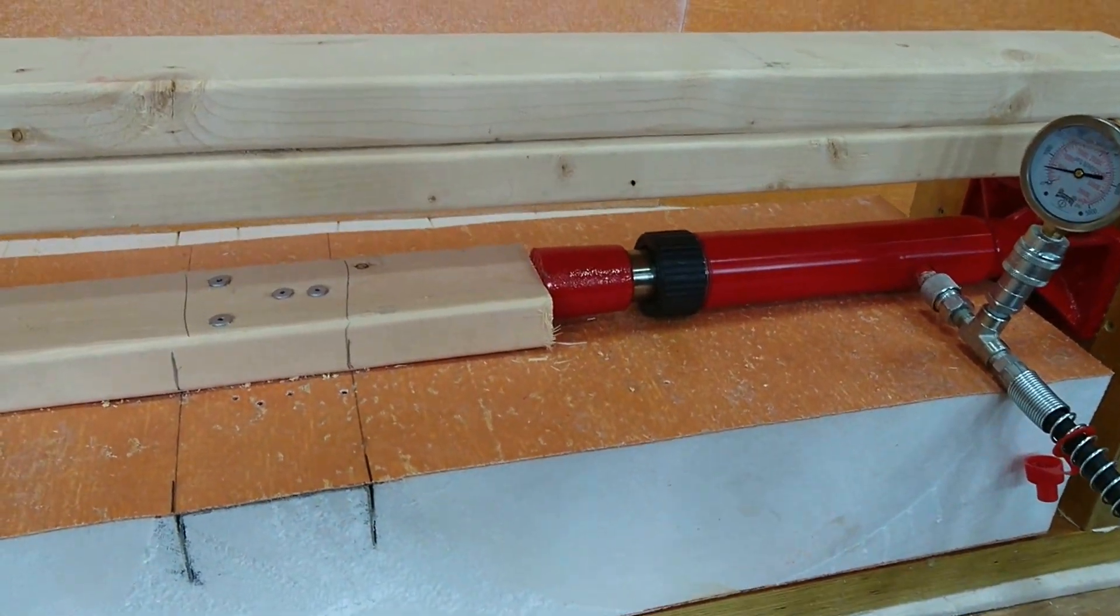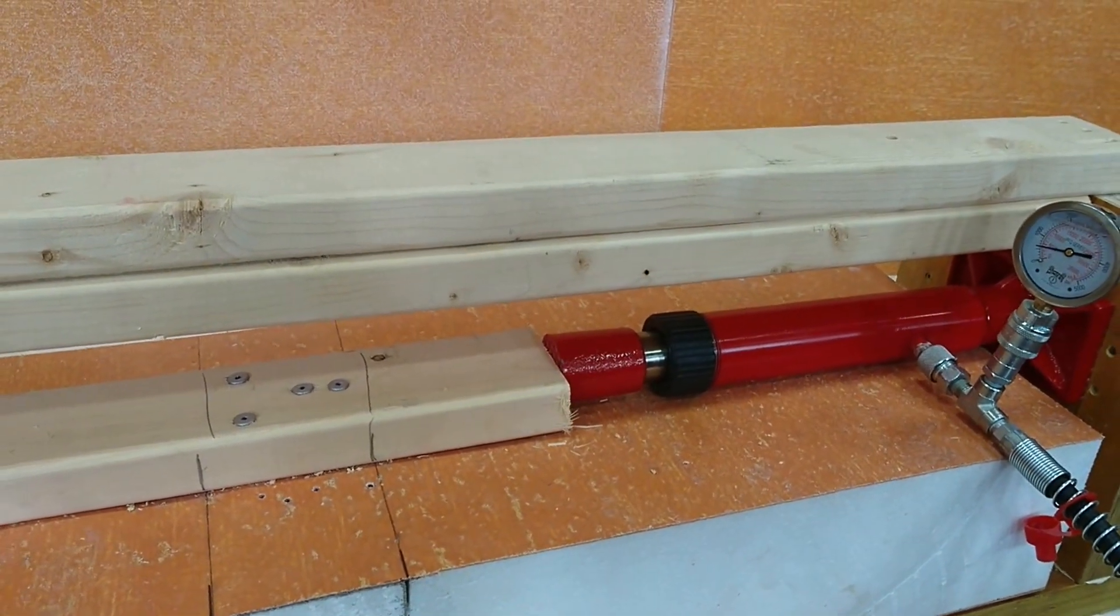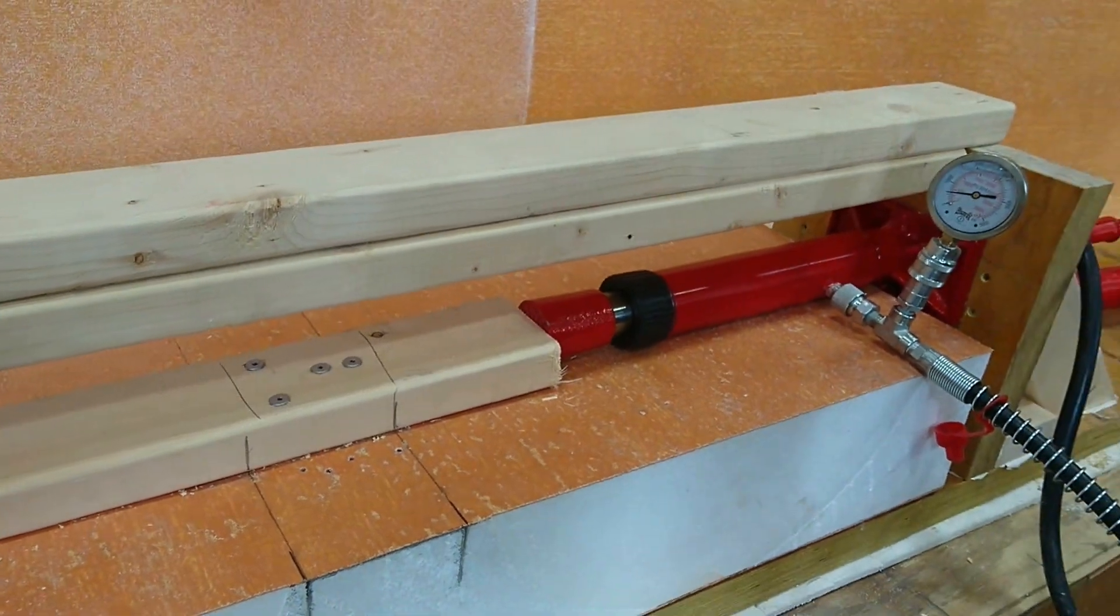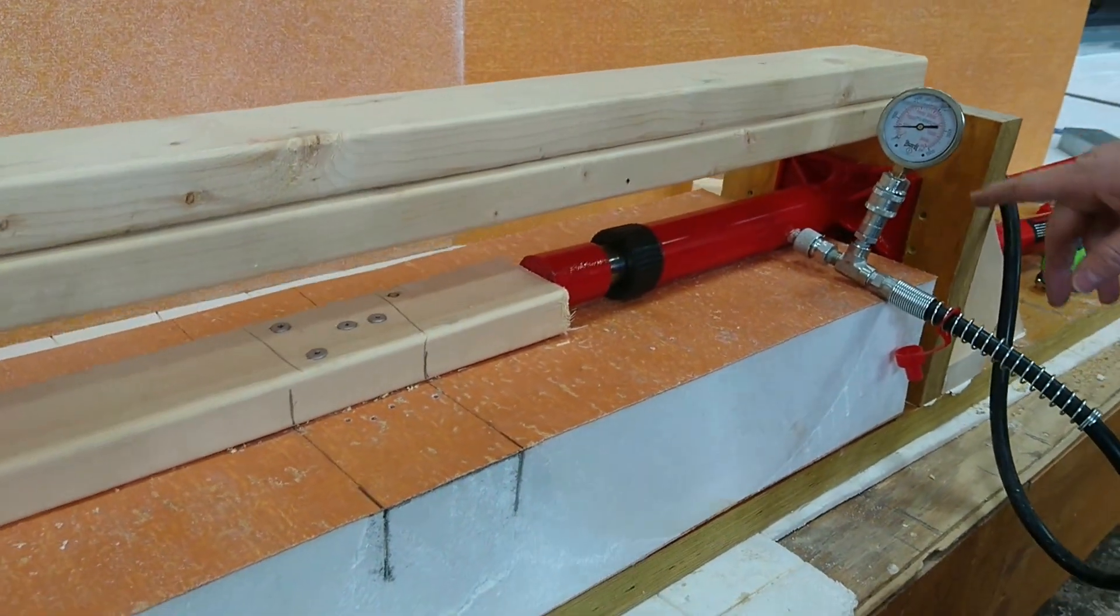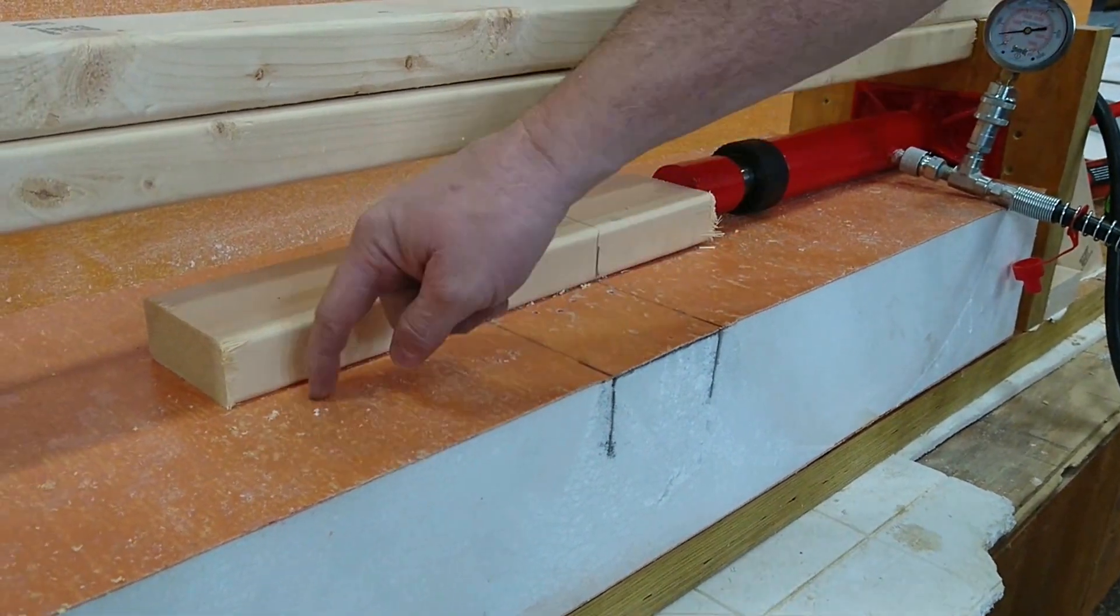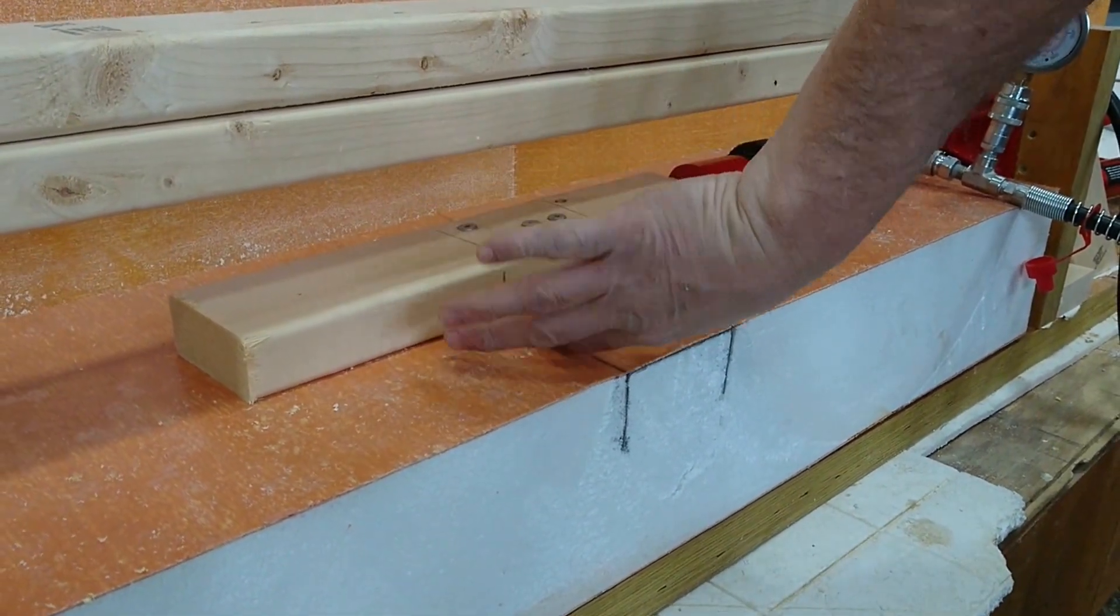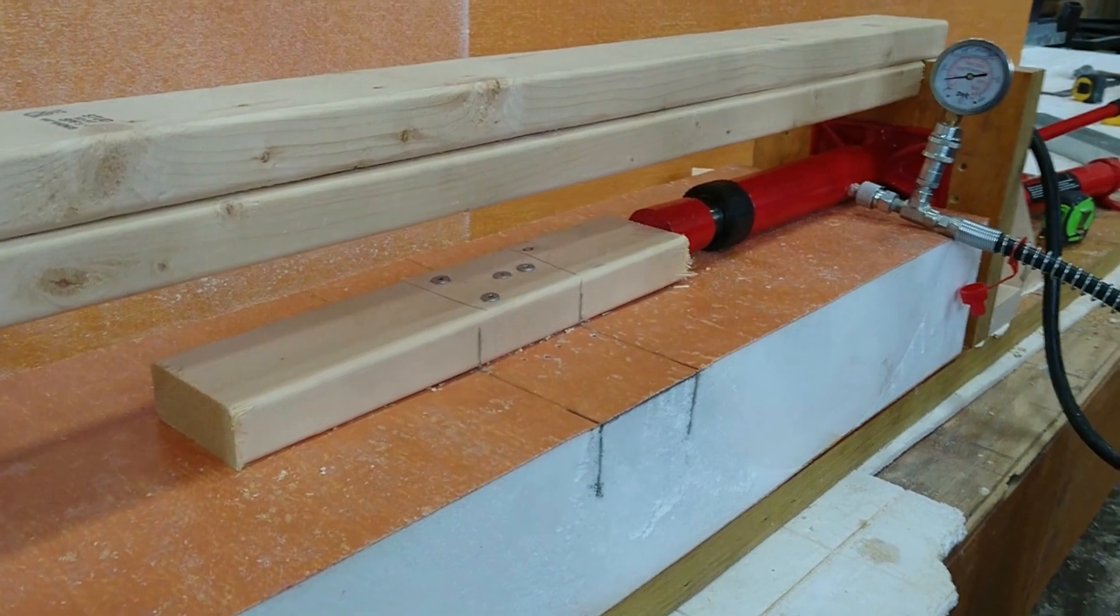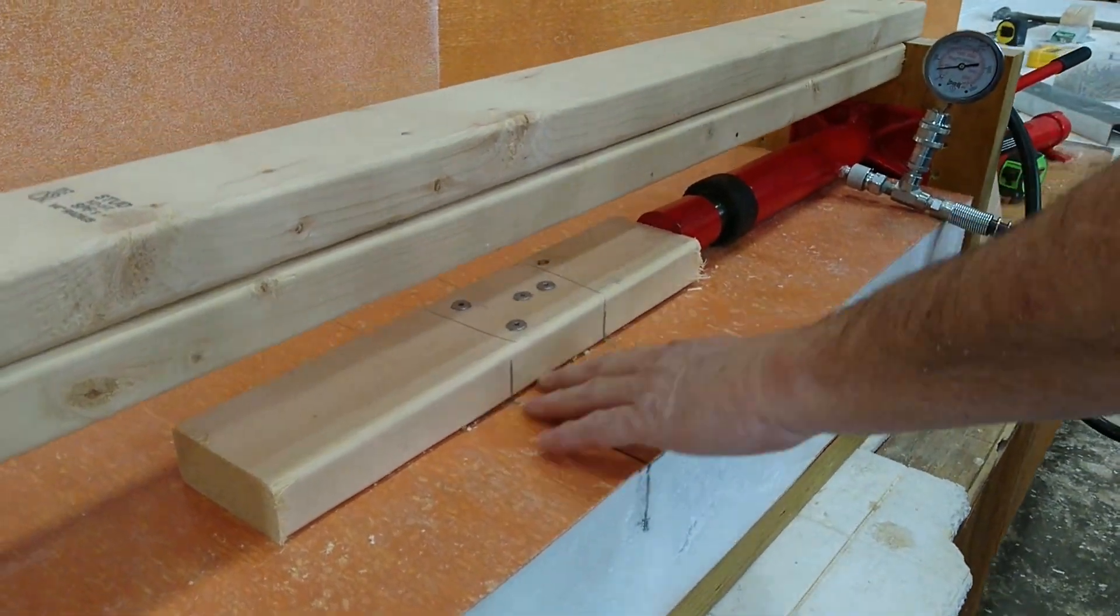Tell me when I get to 500, David. Passing 500. We're holding good at 500. This seems to be a much better setup because of the length of this. It doesn't allow the 2x4 to just rock down into the panel. So it's giving us a more true representation.